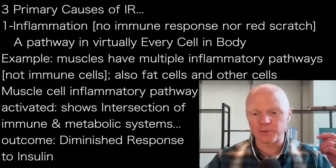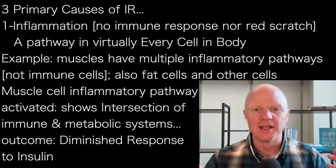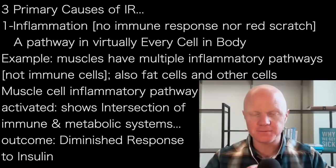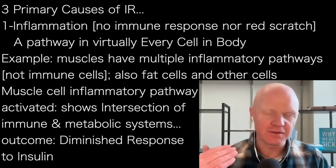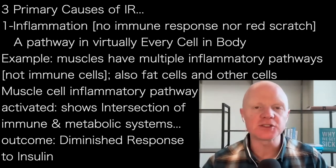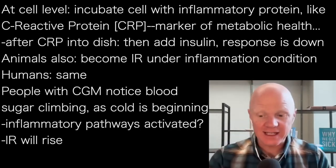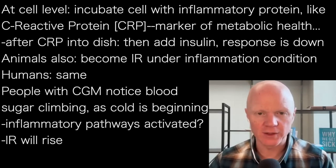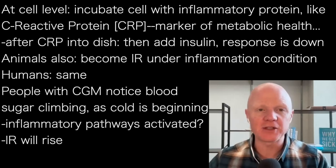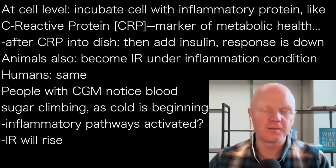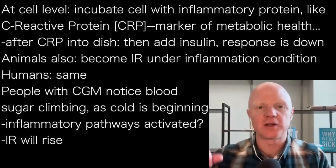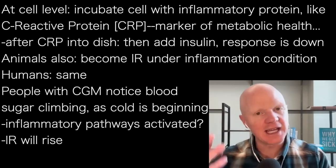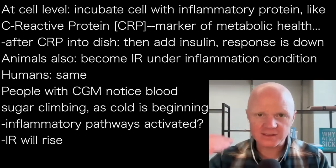What's interesting is that in muscle, for example, if you activate the inflammatory pathway, the muscle isn't going to start producing antibodies, but it shows this intersection of the inflammatory system and the metabolic system. Any time you activate inflammatory pathways within a cell, you cause that cell to have a diminished response to insulin. At a cell level, you can just incubate cells with an inflammatory protein — like C-reactive protein. CRP, or C-reactive protein, is increasingly measured in clinical tests because it's such a good marker of inflammation and overall cardiometabolic health. If you put C-reactive protein in the culture bath with muscle, fat, liver, or brain cells and then test how those cells respond to insulin, the response will be diminished — the insulin response will be turned down.